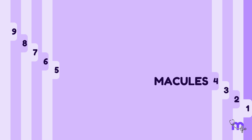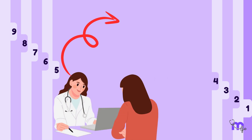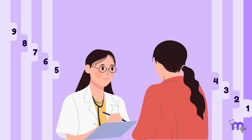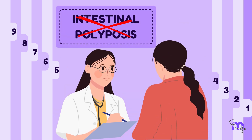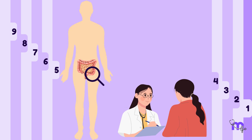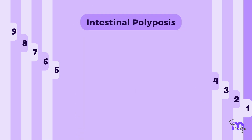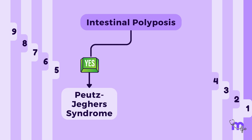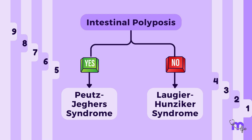The fourth possibility is the presence of intraoral or perioral macules. In such a scenario, patients are referred to a physician to rule out a condition called intestinal polyposis, which involves a medical evaluation to check for polyps in the intestines. If the finding is positive for intestinal polyposis, then Peutz-Jeghers syndrome becomes a possible diagnosis. If intestinal polyposis is ruled out, then an alternative diagnosis of Laugier-Hunziker syndrome is considered.